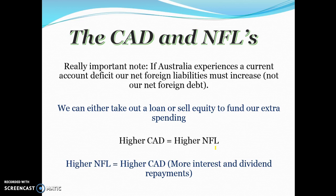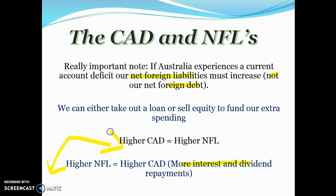It's really important to note that if Australia experiences a current account deficit, net foreign liabilities must increase — but not necessarily net foreign debt. We can either take out a loan or sell equity. Higher CAD equals higher net foreign liabilities, and higher net foreign liabilities equals a higher CAD in the future due to more interest and dividend repayments. A common question is to analyze this relationship between a higher current account deficit and higher net foreign liabilities.